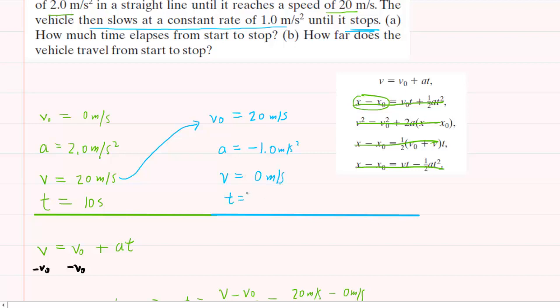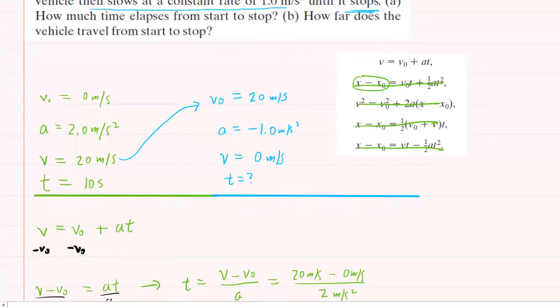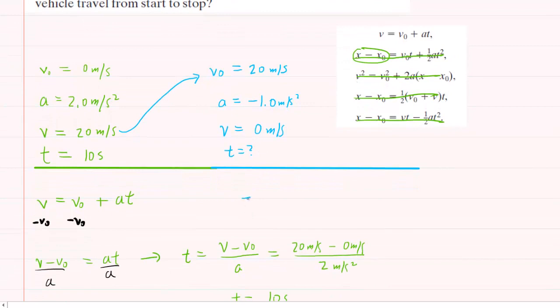And again, we're going to calculate the time. So we're going to use the same equation that we derived earlier. So t equals final minus initial velocities over acceleration. We'll plug in the known values here. So we have 0 meters per second minus 20 meters per second over negative 1 meters per second squared. And in this case, you'll get a time value of 20 seconds. So we can now put that in as a known value.